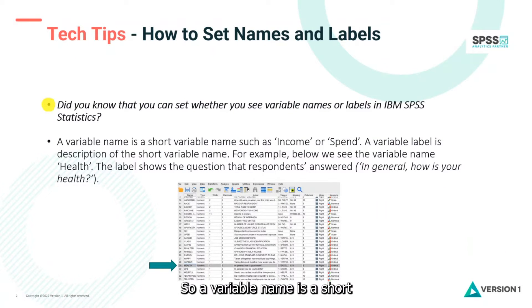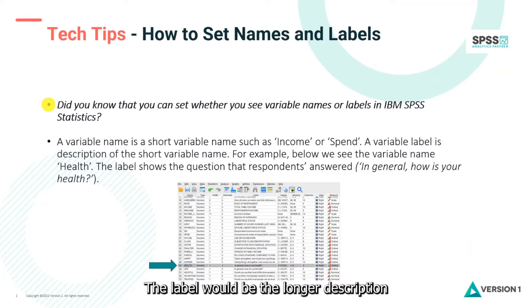A variable name is a short variable name such as 'income' or 'spend.' The label would be the longer description or the actual question.